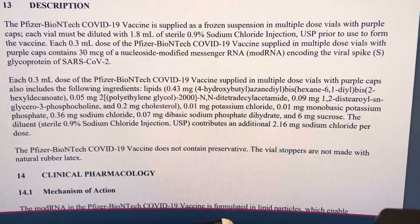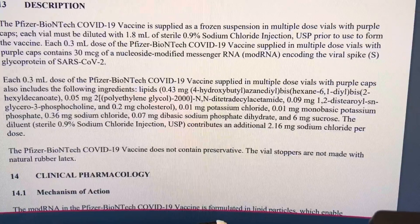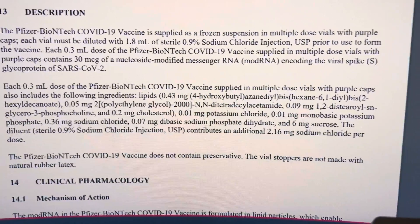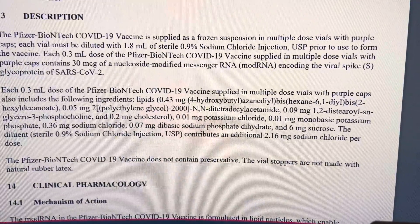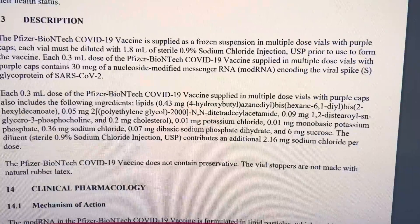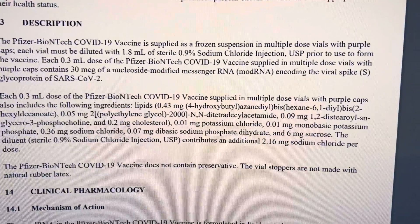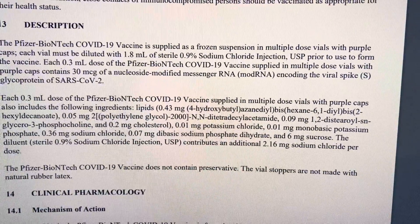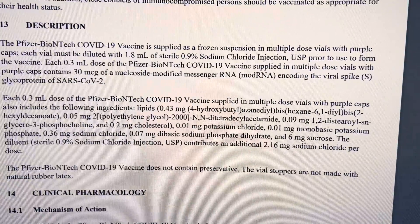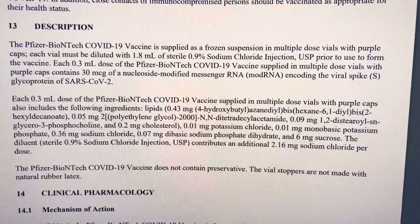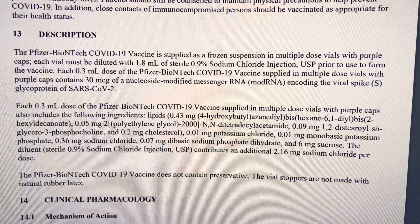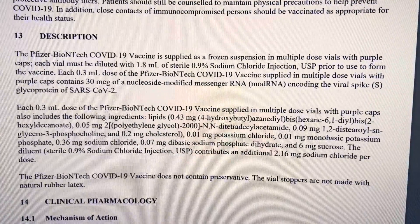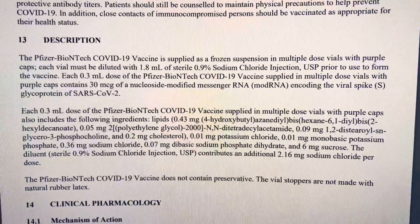And 6 milligrams of sucrose, which is sugar. The diluent — meaning the liquid — is sterile 0.9% sodium chloride, which is common in all kinds of injections, contributing an additional 2.16 milligrams of sodium chloride per dose.